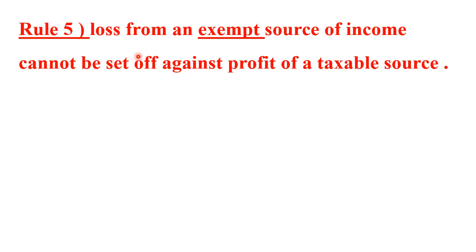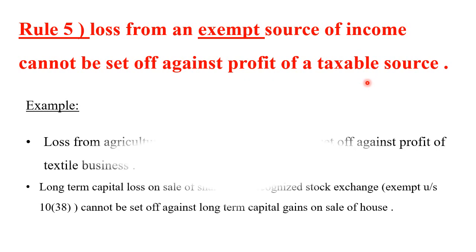Rule number 5: loss from an exempt source of income cannot be set off against profit of a taxable source. For example, agricultural income in India is exempt from tax, so any loss from agricultural activity cannot be set off against taxable income.